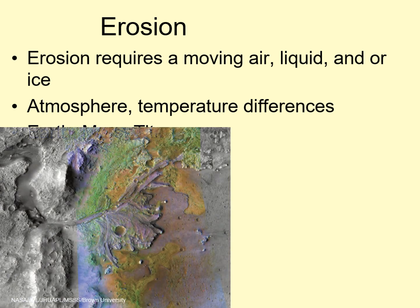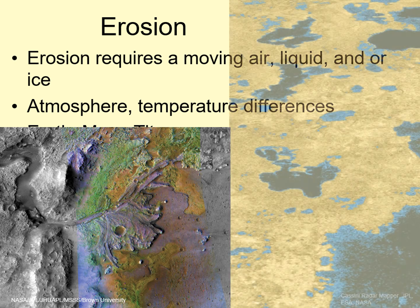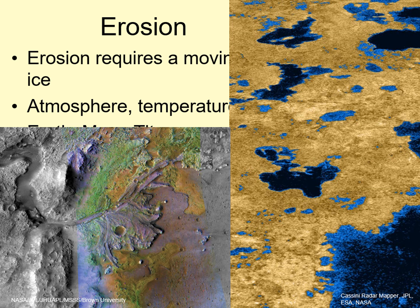Mars has a long history of wind erosion, and shows signs that in the past it had substantial water erosion as well. Titan is the only moon with a substantial atmosphere. It has lakes and rivers of liquid ethane, as well as wind-blown dunes made of grains of hydrocarbon ice.